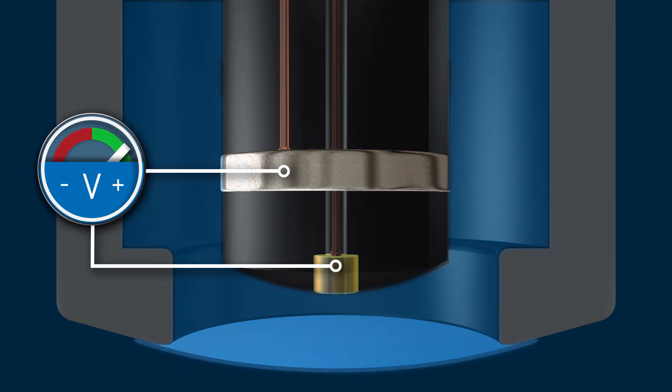After a certain period of time, a silver bromide layer forms on the silver anode. This layer reduces the effective voltage and thus the oxygen flow, which can lead to measurement error. In applications with high temperatures during cleaning or sterilization, the silver bromide layer is regularly removed.